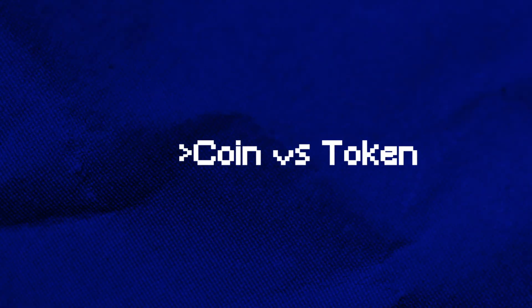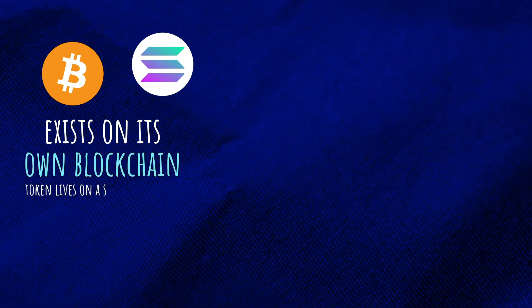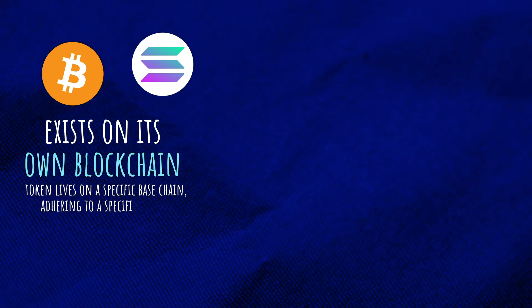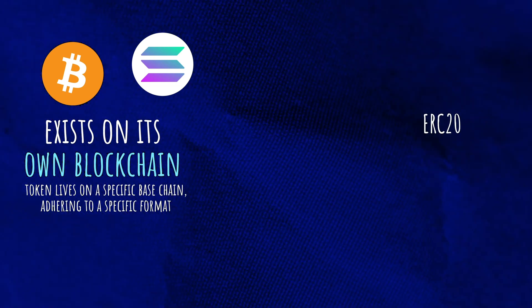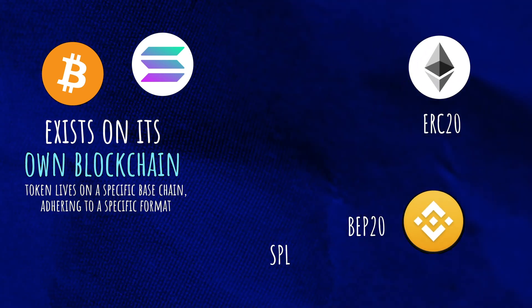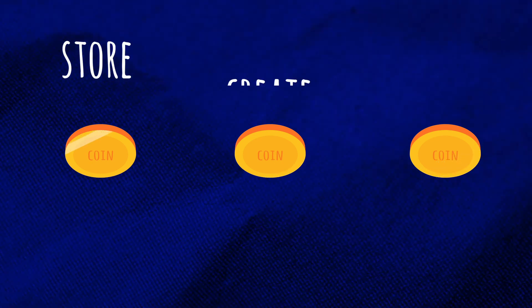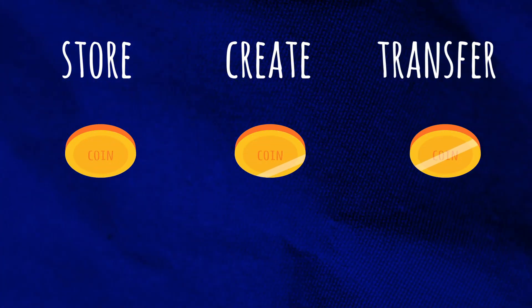Let's talk about coin versus token. Cryptocurrencies can be split into coins and tokens, and it's crucial to understand the difference. While a coin like Bitcoin or Solana exists on its own blockchain, a token lives on a specific base chain, adhering to a specific format like ERC-20 for Ethereum, BEP-20 for Binance Smart Chain, SPL for Solana, and so on. Coins have a specific utility over their whole network, such as for gas or governance, and are normally used to store, create, or transfer monetary value between all participants.